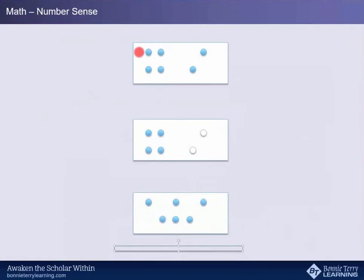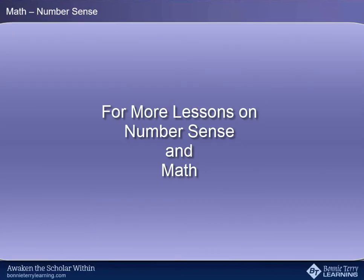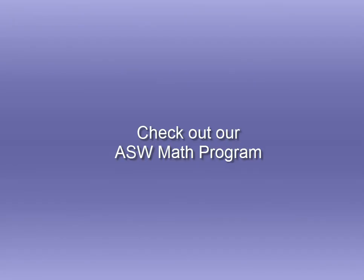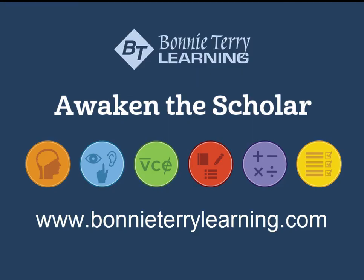But I could have just counted by twos, two, four, six, or I could have counted this way, two, four, six. Are you trying to get the child to understand that there may be more than one way to arrive at the answer? Yes. You're trying to get the child to understand that there may be more than one way.